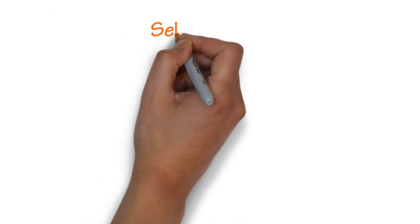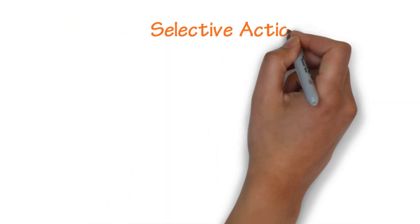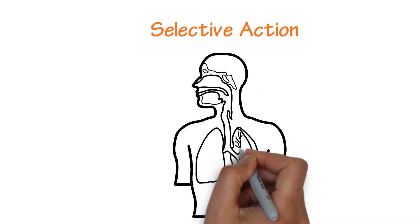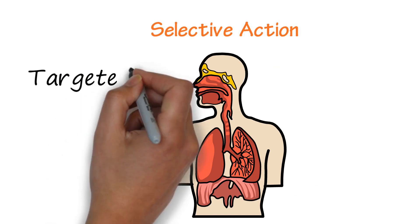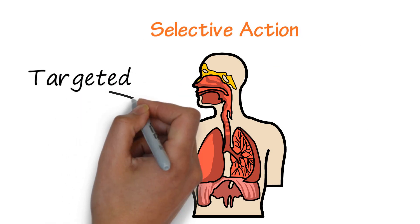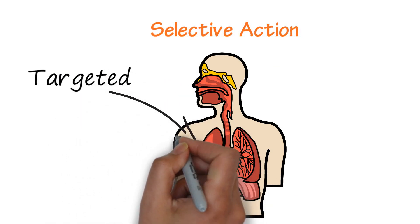Once the drugs reach the bloodstream, they will have action that is selective to certain tissues and organs. Drugs can be targeted for specific therapeutic effects, but most receptors can be found in multiple tissues throughout the body. This allows drugs to have multiple effects.